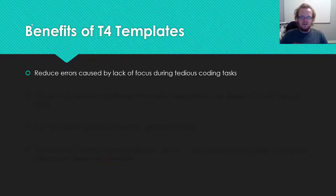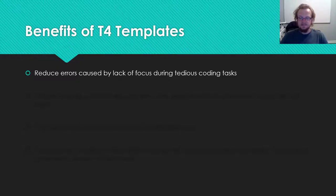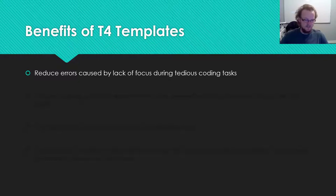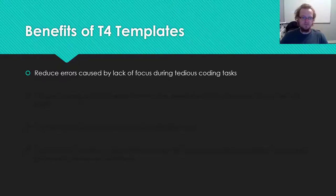If we look at the benefits of using T4 templates versus manually coding all your controllers — for the EC layer, the web API layer, and the models or DTOs — what you're going to do is reduce errors caused by a software engineer losing focus. All of this stuff is basically copy-paste code, and what's going to happen is you'll copy and paste something, miss a type, miss a dot, miss something very minor, and that's going to cause a bug.